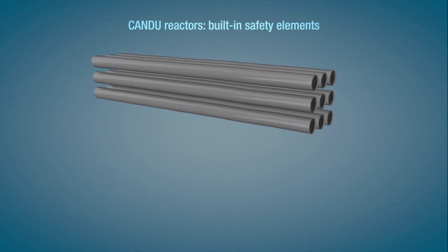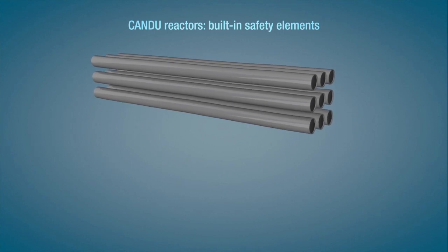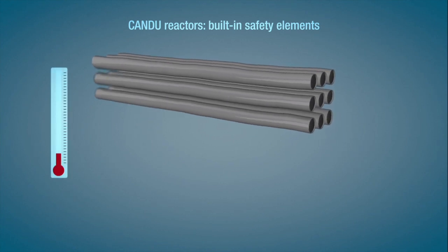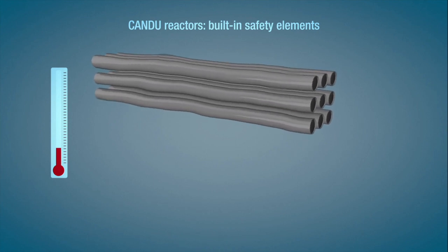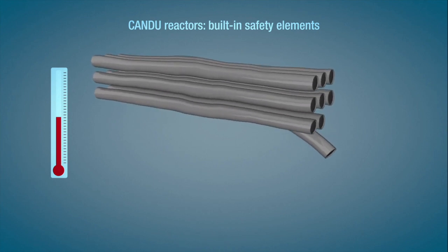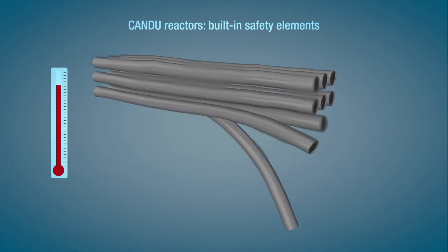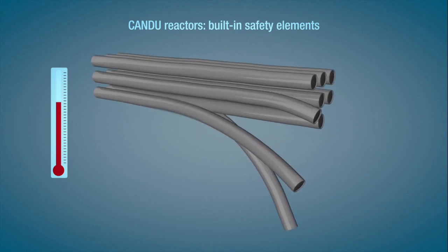The fuel channels themselves can only maintain the nuclear reaction process if they are mechanically sound. Should temperatures start to increase abnormally, these fuel channels will start to deform and bend due to gravity, instantly reducing the efficiency of the reaction and cooling the reactor.